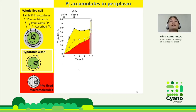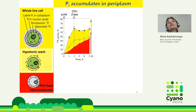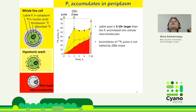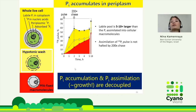Pulse-chase results confirmed: water removes most of the label accumulated in live cells that is not yet in macromolecules. This labile periplasmic pool is five to ten times larger than the amount of phosphorus assimilated into cellular macromolecules. Accumulation of phosphate is not halted by the chase, consistent with the earlier ocean observations. The cell accumulates and assimilates much more phosphorus than it needs at that point in time, and phosphate accumulation and assimilation are decoupled.